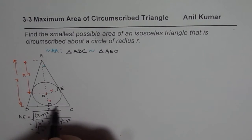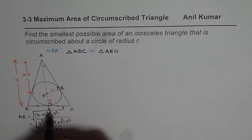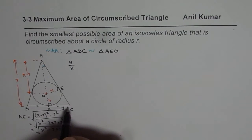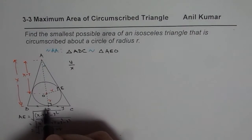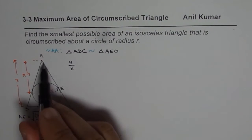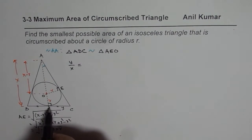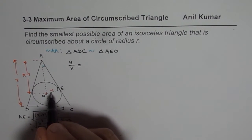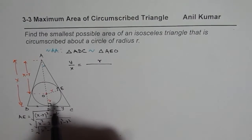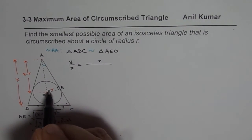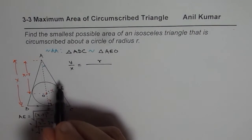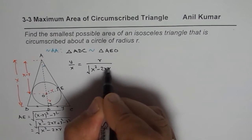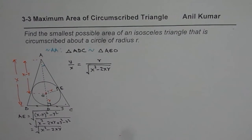Let DC equal Y, which is half the base. So we have Y over X — that is DC over the height. Now the side opposite to angle A in the big triangle is Y, and in the small triangle it is R. So we write R over AE. We already simplified AE as the square root of X² minus 2XR. So now we can relate Y, X, and R the radius.